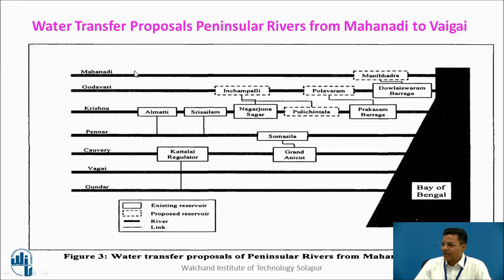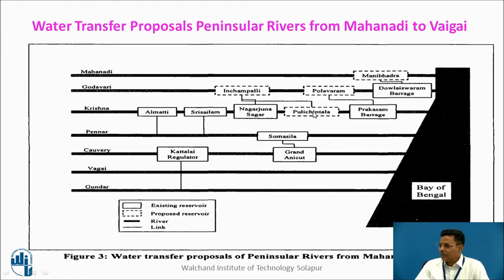The schematic shows water transfer in the Peninsular River Component from Mahanadi. Dotted rectangles show proposed reservoirs and solid rectangles show existing reservoirs. Mahanadi water will be transferred to Godavari at Dowleswaram barrage. Two storages are proposed at Inchampalli and Polavaram. Links go from Inchampalli reservoir to Nagarjuna Sagar, and from Polavaram reservoir to Prakasham barrage. Existing reservoirs include Almatti, Srisailam, and Nagarjuna Sagar. Water will be received in Pulichintala reservoir. From Almatti and Srisailam, Krishna-to-Pennar links start, and water will ultimately be collected in Somasila, then transferred to Grand Anicut. From Kaveri, another link goes to Gundah.